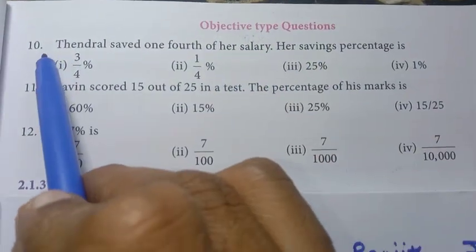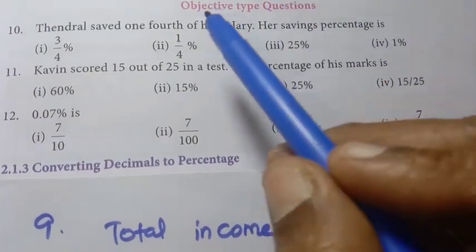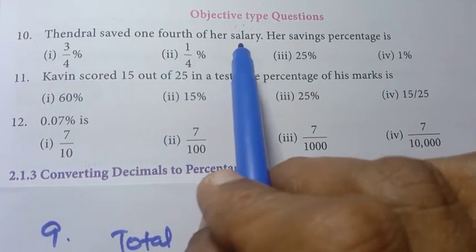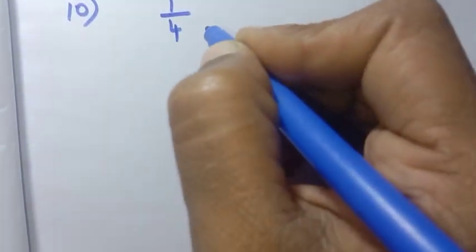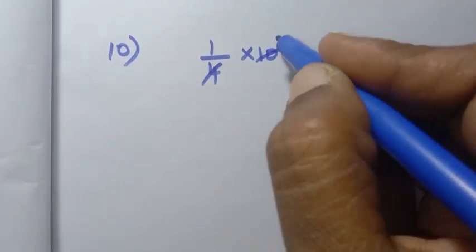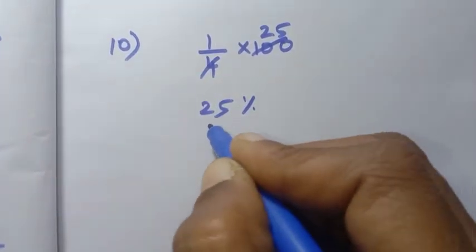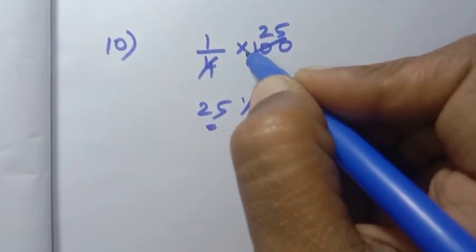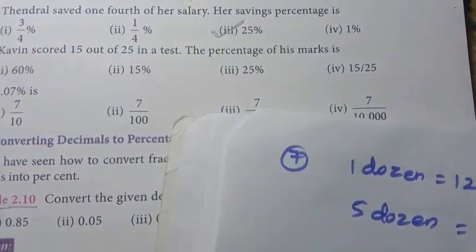Objective type questions. 10th question: Tendral saved one-fourth of her salary. What is her savings percentage? One-fourth — to convert to percentage, multiply by 100. Four twos are eight, four fives are twenty. So the answer is 25 percentage. The third option is the right answer.